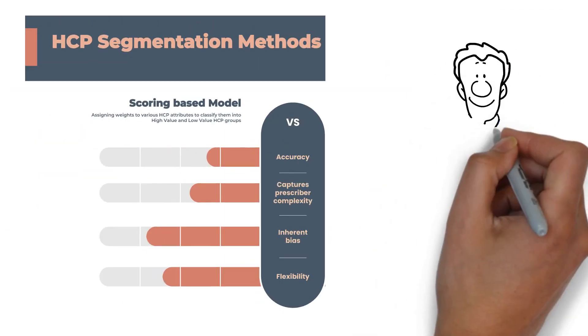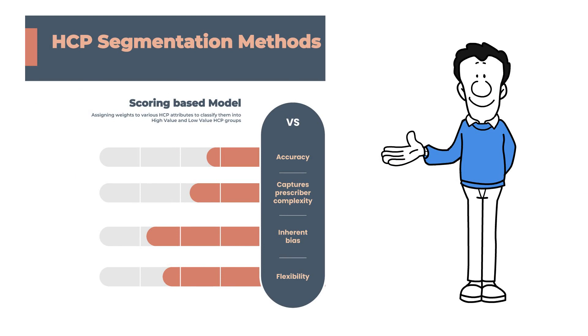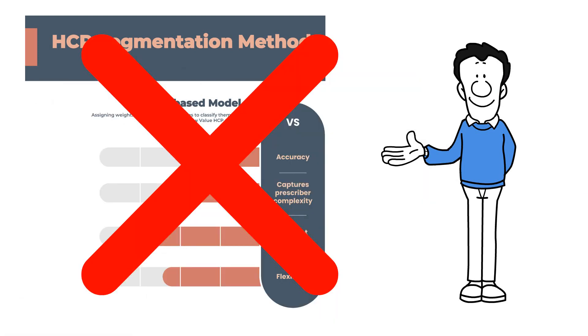Traditional scoring can be biased and resource-intensive, with a tendency to chase the biggest prescribers, which might not be the most profitable strategy.